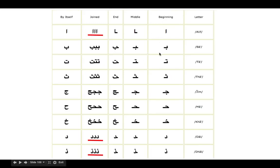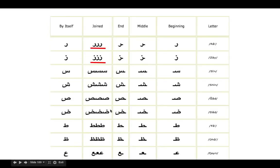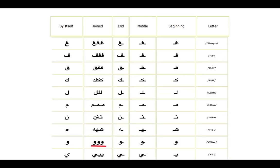Each letter has a different shape depending on whether it comes at the beginning, middle, or end of a word — this is how they are joined together in cursive writing. For the naughty letters, marked in red, they can be attached to the letter before them but not to the letter after them — the next letter must begin separately. Practice writing Arabic a lot; inshallah it is very easy.